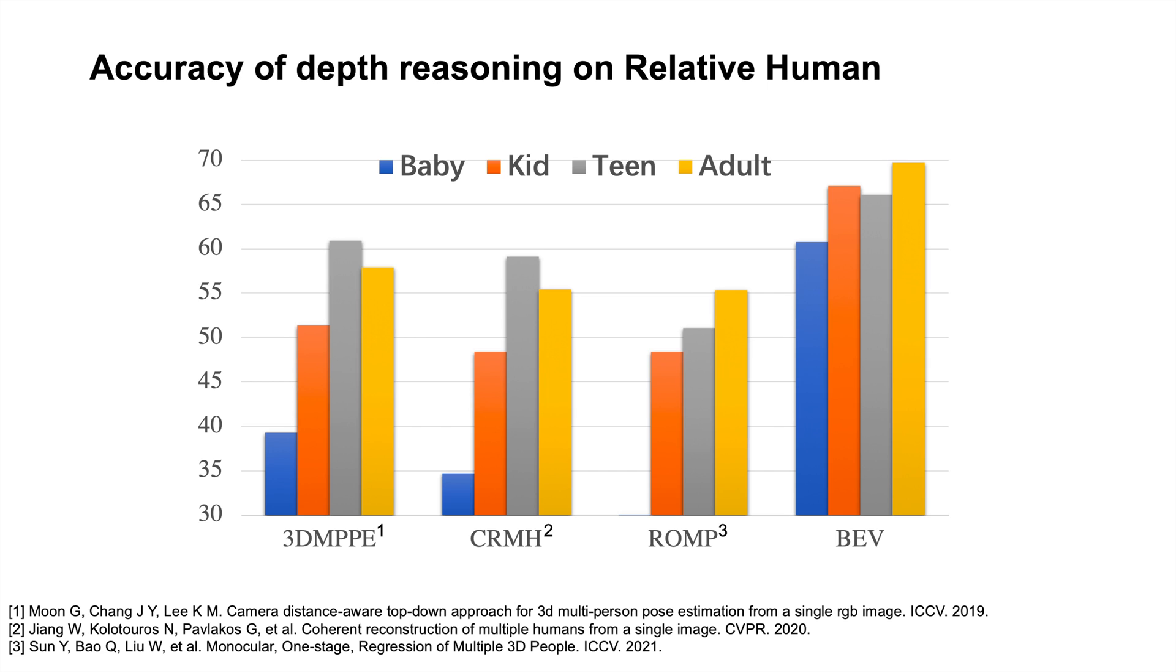This chart shows the depth reasoning accuracy of recent state-of-the-art methods on the Relative Human dataset. 3D MPPE and CRMH are multi-stage methods that learn depth reasoning. BEV improves the depth reasoning accuracy relative to these state-of-the-art methods by a significant margin, especially in young groups.